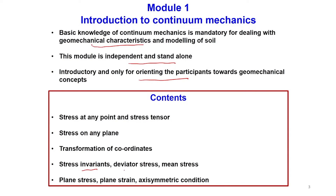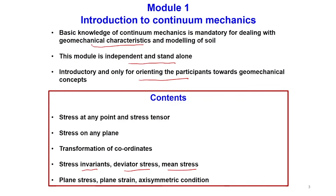We will discuss stress invariants, essentially focusing on deviatoric stress and mean stress and their implications. All of you would have already known what is meant by deviatoric stress and mean stress, but from the perspective of stress invariants we will discuss this further. This will be followed by some discussion on 3D to 2D idealization in the form of plane stress, plane strain, and axisymmetric conditions. So this will be a very introductory level treatment of continuum mechanics.